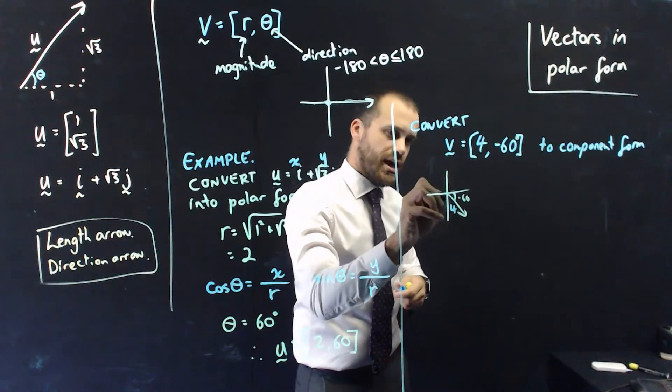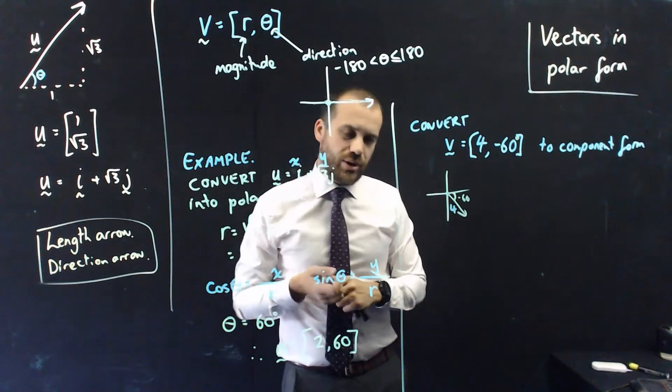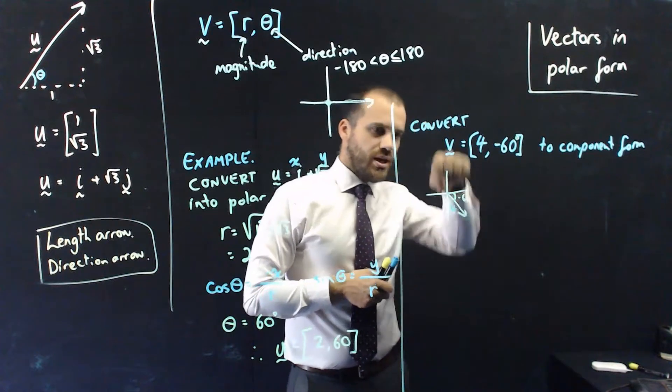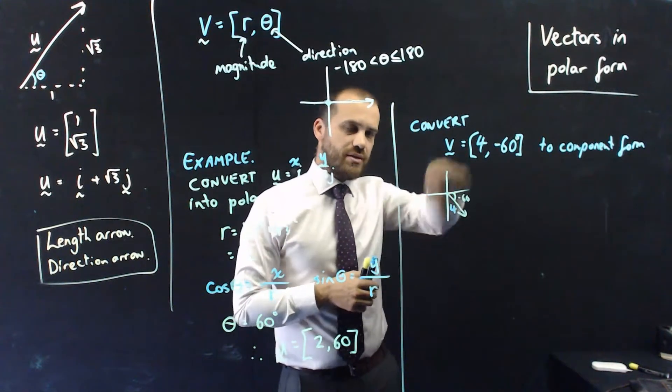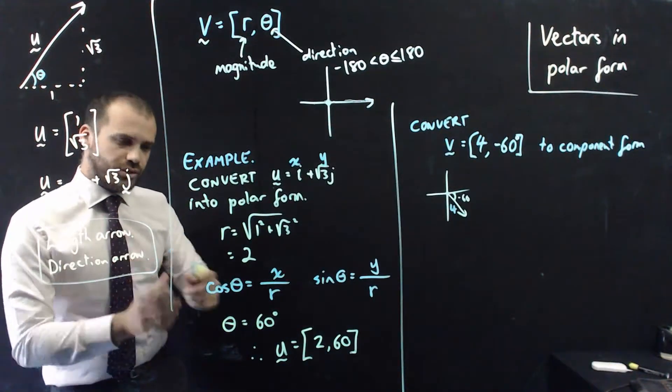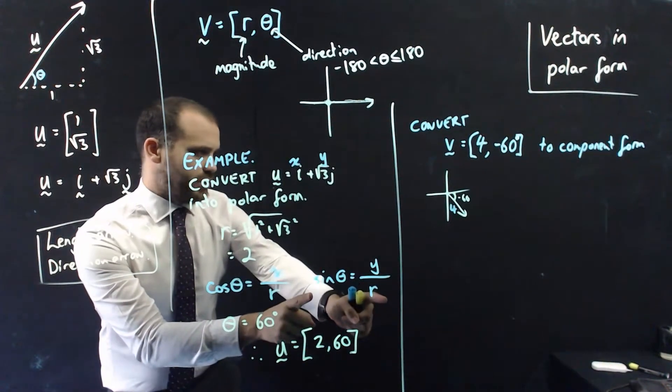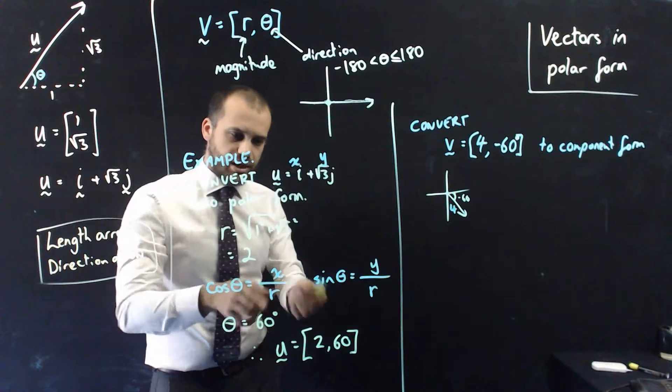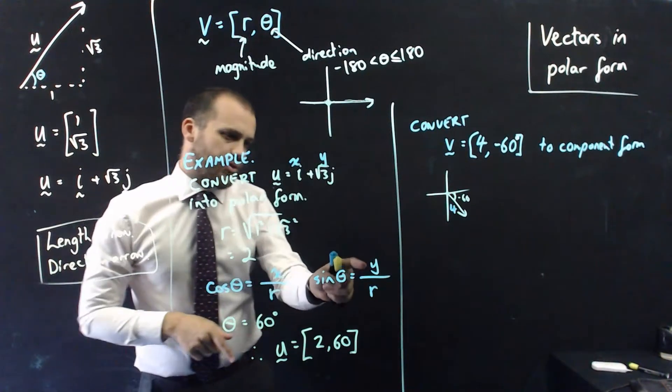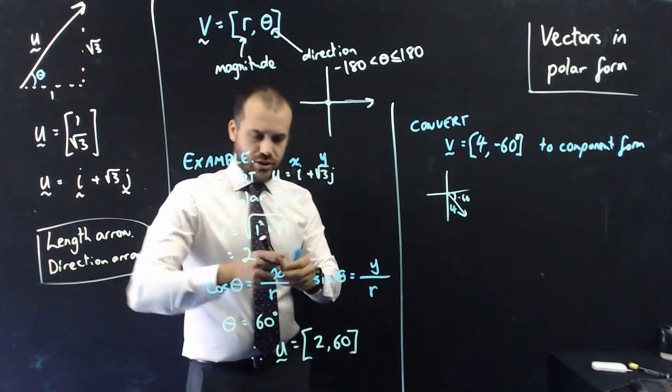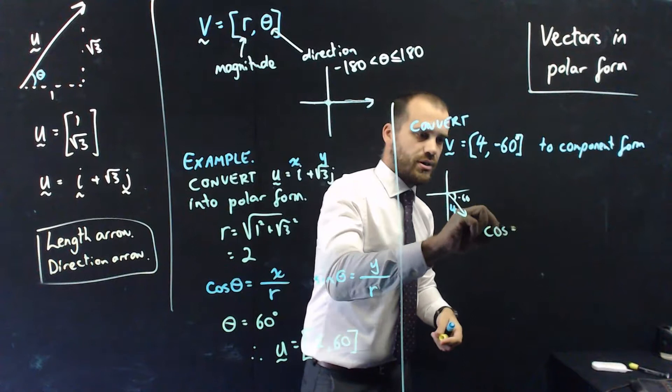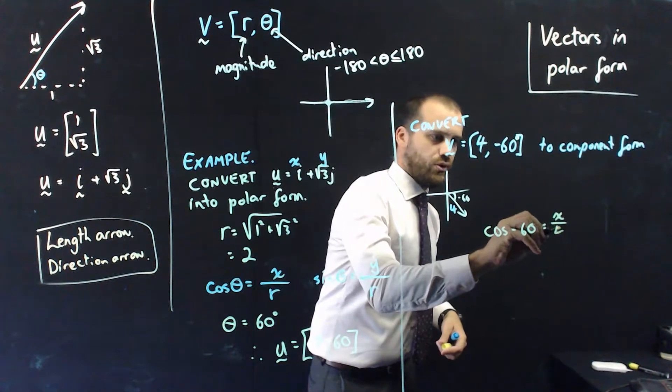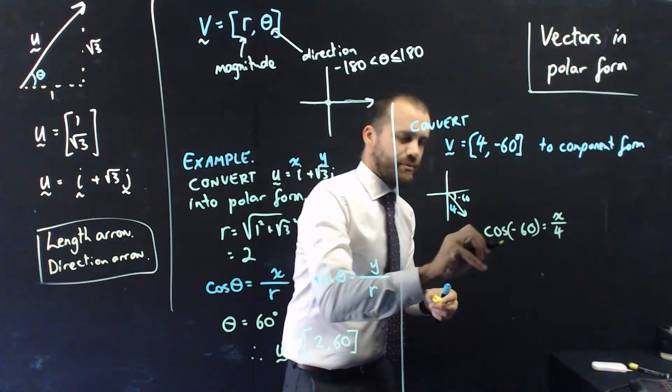So, length 4, angle negative 60, and now I just need to come up with i and j components. Now, drawing is useful because I know that the i component is going to be positive, it's moving in that direction, and I know that the j component is going to be negative because it's moving downwards. So, what we can actually do is take this formula here and this formula here and use those formulas to find the i components and the j components because that's the coefficient of the i component and that's the coefficient of the j component. So, for this particular question, I can say that cos negative 60 equals x over 4.